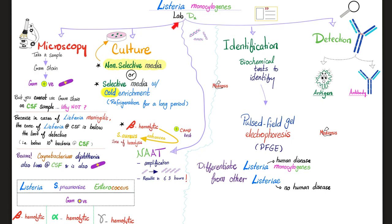Please be careful. Just because you found a gram-positive rod in the CSF doesn't necessarily mean this is Listeria — it could be Corynebacteria. You also need to distinguish Listeria from Streptococcus pneumoniae and enterococci. Listeria is beta-hemolytic, Strep pneumo is alpha-hemolytic, and enterococcus is gamma-hemolytic. Moreover, Listeria is a rod, but pneumococci and enterococci are cocci.